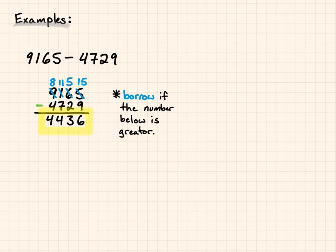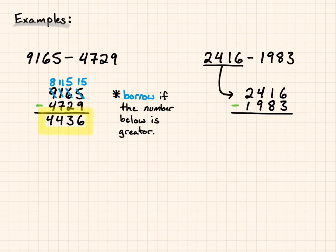My second example. 2,416 minus 1,983. I'm going to put the first number above, second number below. And then subtract. I can subtract 6 minus 3. I get 3. 8 is greater than 1. So I'm going to borrow from my place value over. So 4 becomes a 3. And the 1 becomes an 11. 11 minus 8 gives me 3.